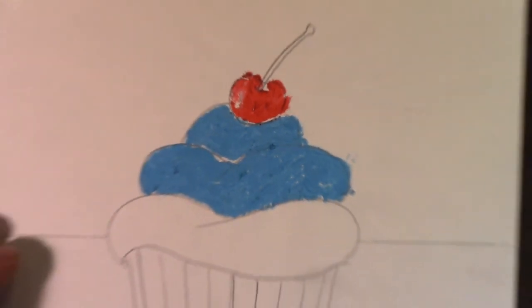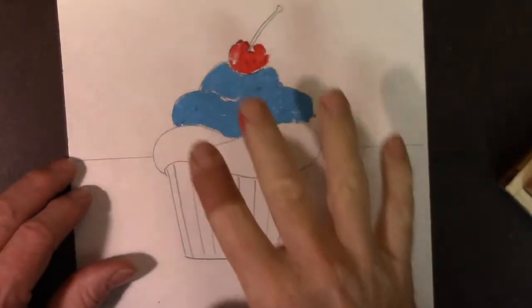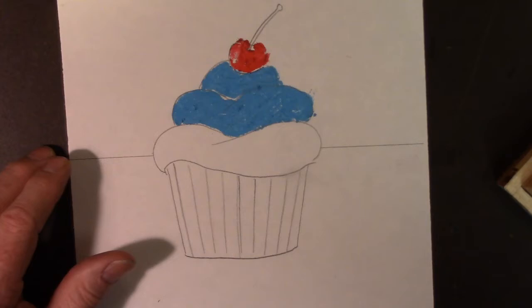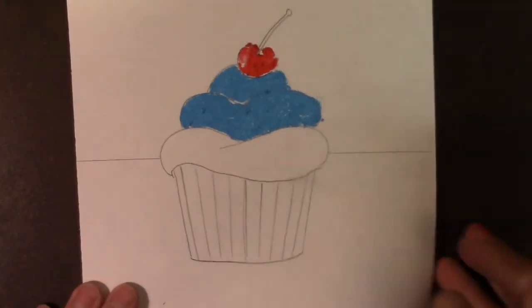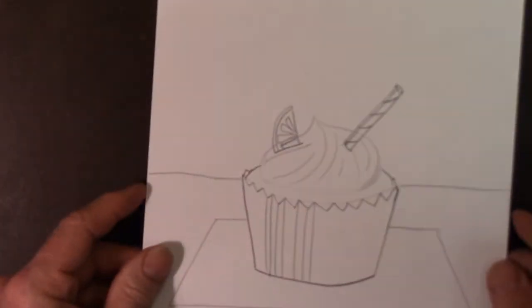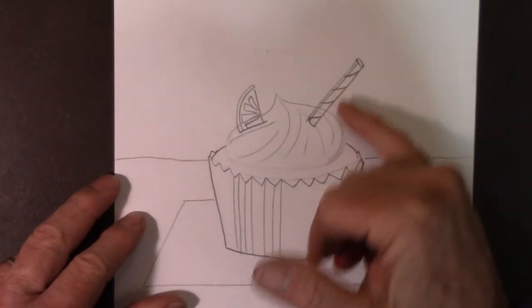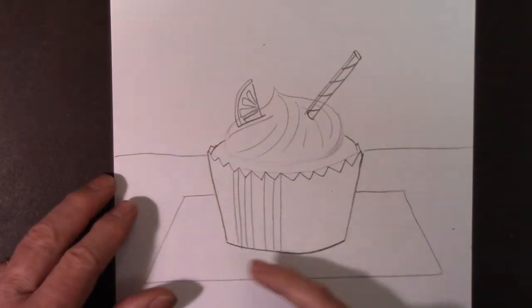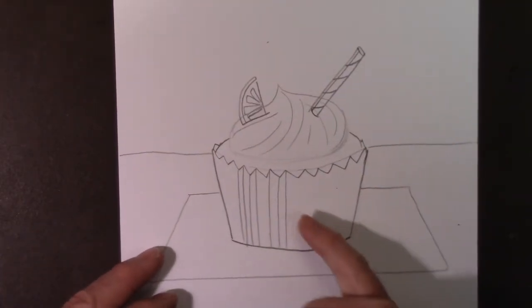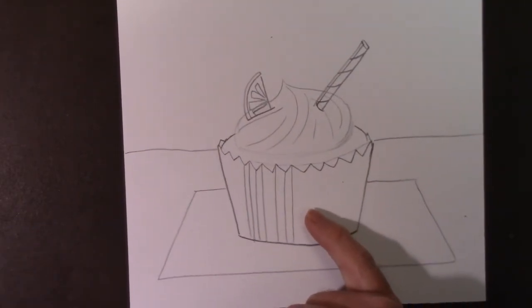Anyway, like I said, I'm not going to be able to finish this one, but I have some others I'm going to show you. So you kind of get an idea. Let's put this to the side. Here's one I did. I got a straw coming in here and I got one of those candy fruits. And this is sitting on a napkin. I haven't finished drawing the cupcake wrapper yet.